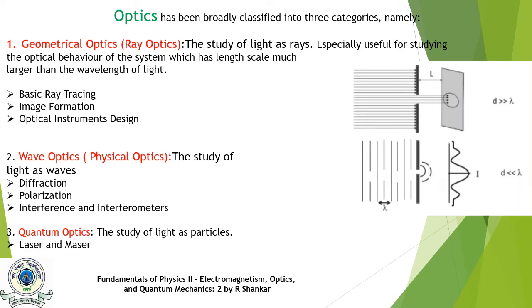Based on approximation, Optics has been broadly classified into three categories: Geometrical Optics or Ray Optics, Wave Optics or Physical Optics, and Quantum Optics.